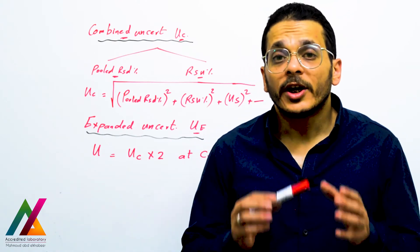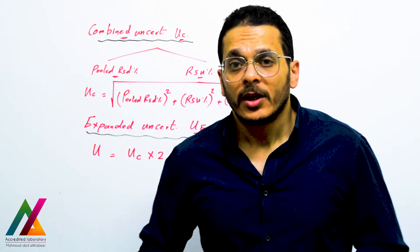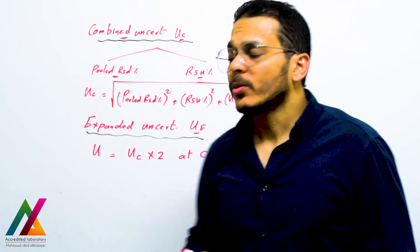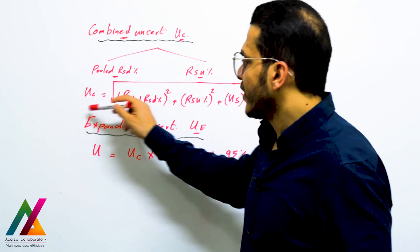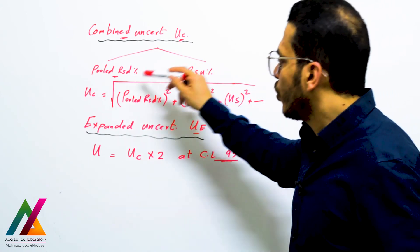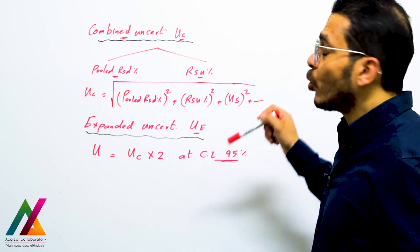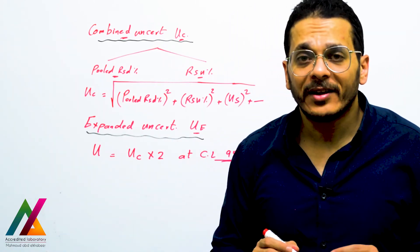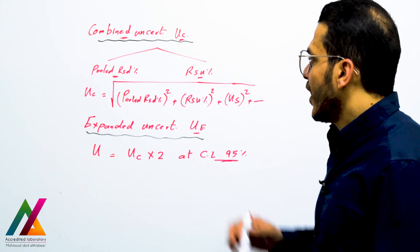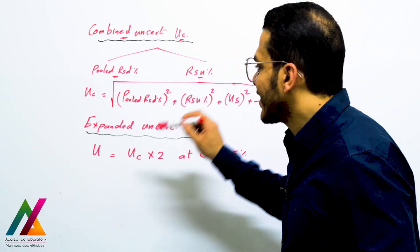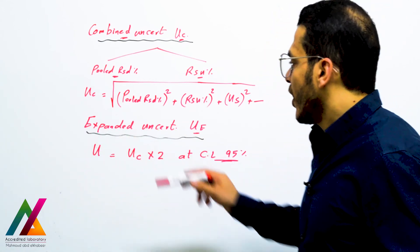Then you calculate the combined uncertainty, where individual uncertainties from each source are combined together to get the overall uncertainty. From Type A evaluation, the combined uncertainty equals the square root of (pooled RSD² + relative standard uncertainty²). If you are responsible for sampling, the sampling uncertainty should also be added. After calculating combined uncertainty, calculate the expanded uncertainty, which is the overall uncertainty at a 95% confidence level.